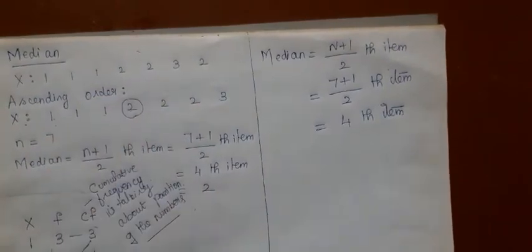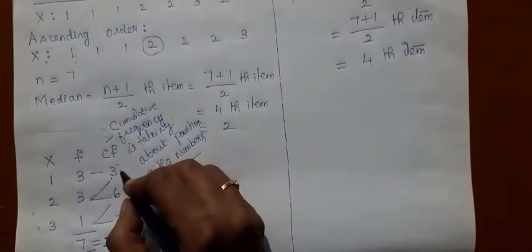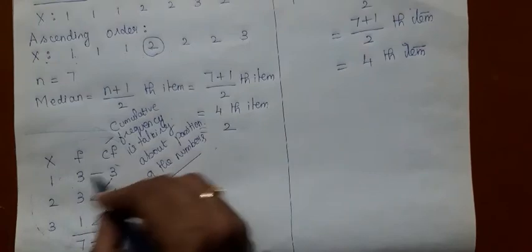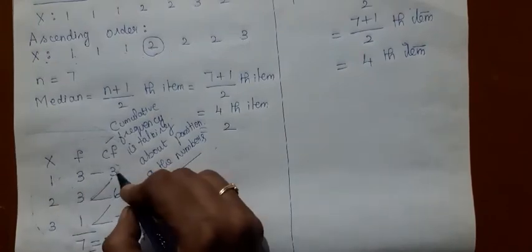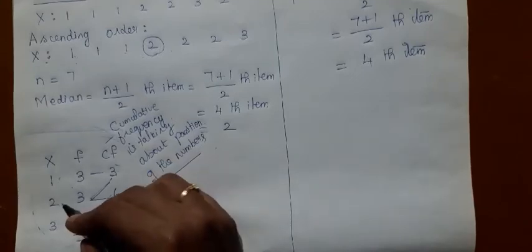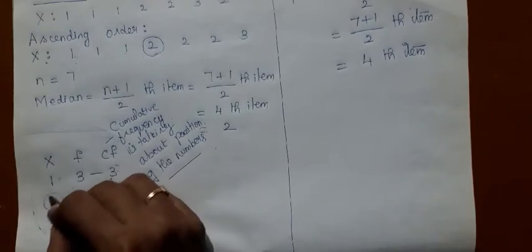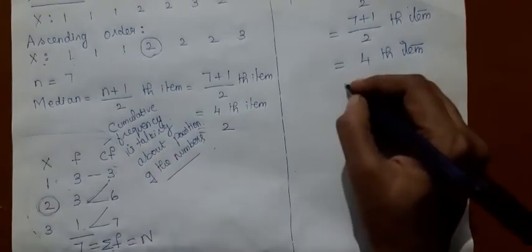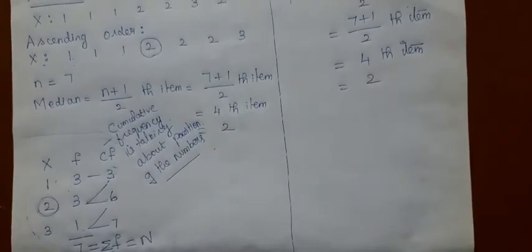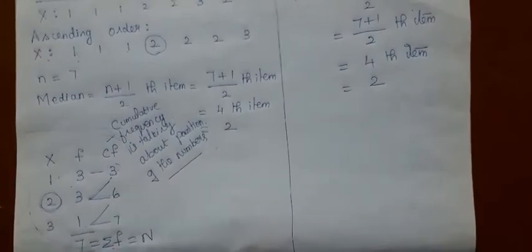Now, how to locate the 4th item in the discrete series? Your data is this. Up to the 3rd position you have 1, and from 4th to 6th position you have 2. So in the 4th position, what is the value of x? It is 2. This is the way you compute median for discrete series.